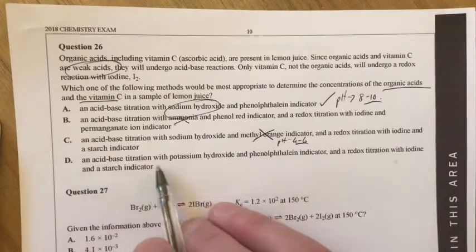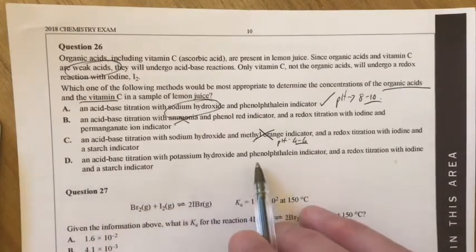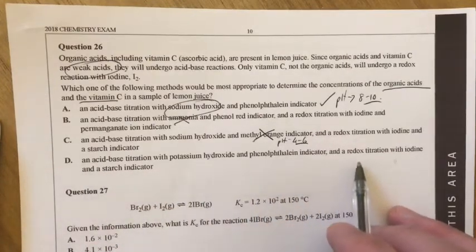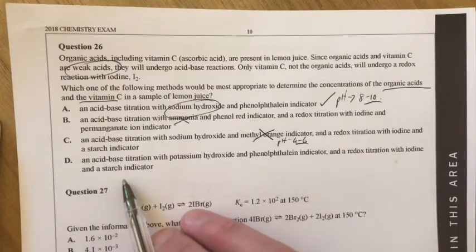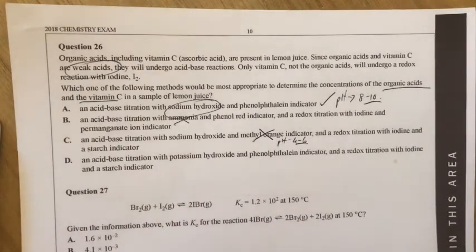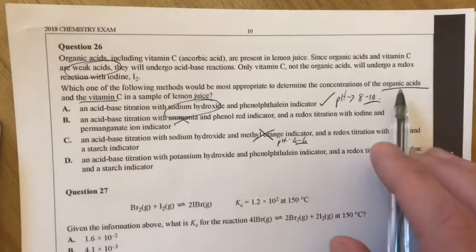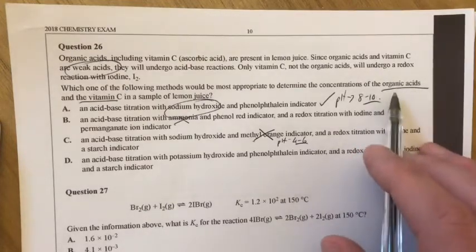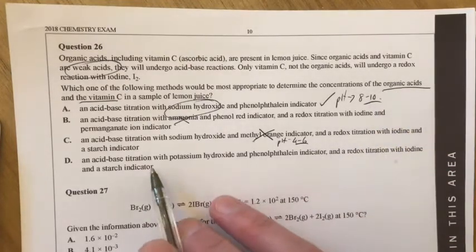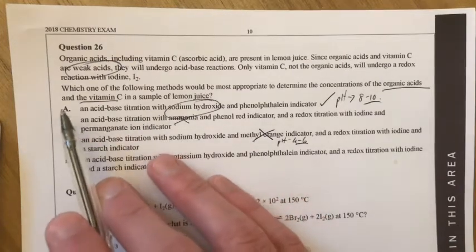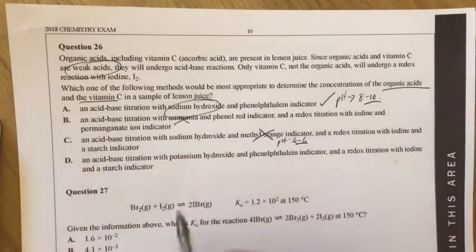Then an acid-base titration with potassium hydroxide and phenolphthalein indicator and a redox titration with iodine and starch. So, as I said, we want to look for the organic acids, so I'm going to say that we would like to then use probably A because that would do both of those things.